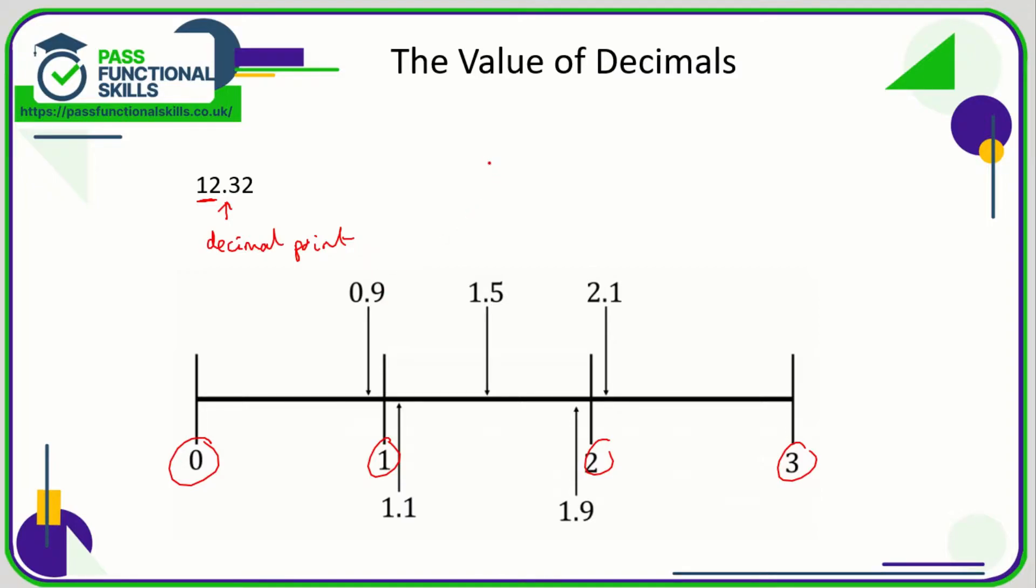Now the first digit, if I've got the number 14.3, then this 3 here represents 3 tenths. If I've got the number 14.56, we have here 5 tenths and here we have 6 hundredths. So the first column is our tenths column and the next column is our hundredths column. The next column would be the thousandths column, the next column would be our ten thousandths, etc. So as we're going to the right, each column is getting 10 times smaller. But you'll probably only be dealing with decimals that have tenths, maybe hundredths.